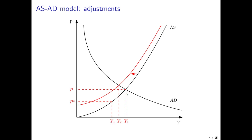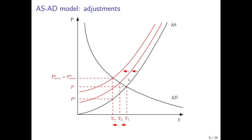If the expected price level is lower than the actual price level and natural output is lower than actual output, the AS curve would shift to the left because unions and workers would start to demand higher wages. They would adjust their price expectations upwards, causing the AS curve to shift left, resulting in lower employment than the initial short run equilibrium and a higher price level. But at this point price expectations would increase further, because actual output is still above natural output, and the AS curve would shift further to the left. This process would last until the final AS curve intersects with the AD curve.